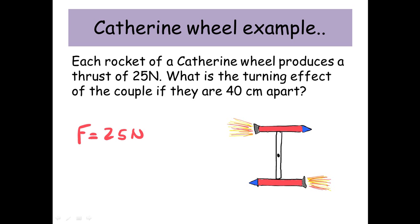The force of one rocket is 25 Newtons. The distance between the rockets is 40 centimeters, which is 0.4 meters. So 25 times 0.4 equals 10 Newton meters.